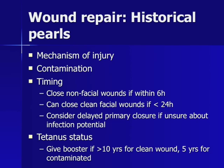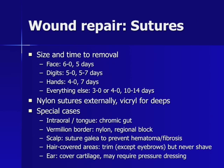Delayed primary closure refers to closure of the wound in a follow-up setting after initial cleansing. Tetanus immunization should be given if greater than 10 years for a clean wound and greater than 5 years for any visibly contaminated wound. Facial lacerations require 6-0 suture removed in 5 days; digits require 5-0 in 5-7 days; hands require 4-0 in 7 days; all other body parts require 3-0 or 4-0 removed in 10-14 days. Nylon sutures should be used externally and Vicryl for deep sutures.